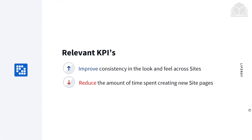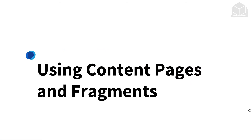Here are the KPIs that they're looking at. We want to improve the consistency in the look and feel across sites, making sure everything is within the brand. We also want to reduce the amount of time spent creating new site pages. That brings us to our first section: using content pages and fragments.